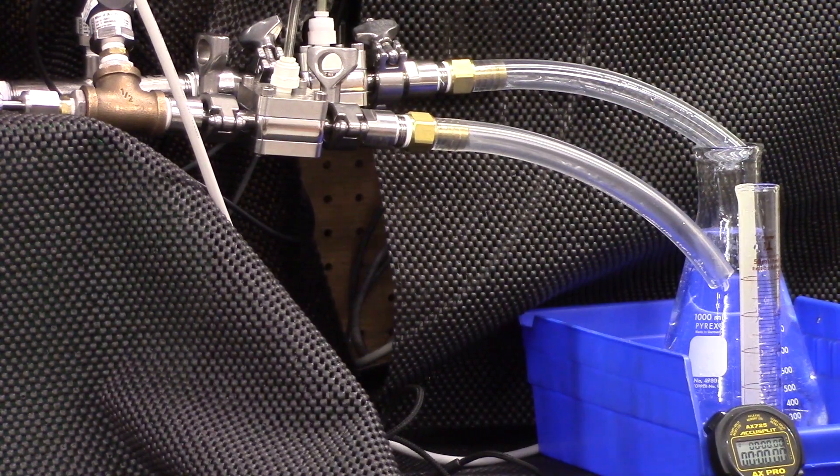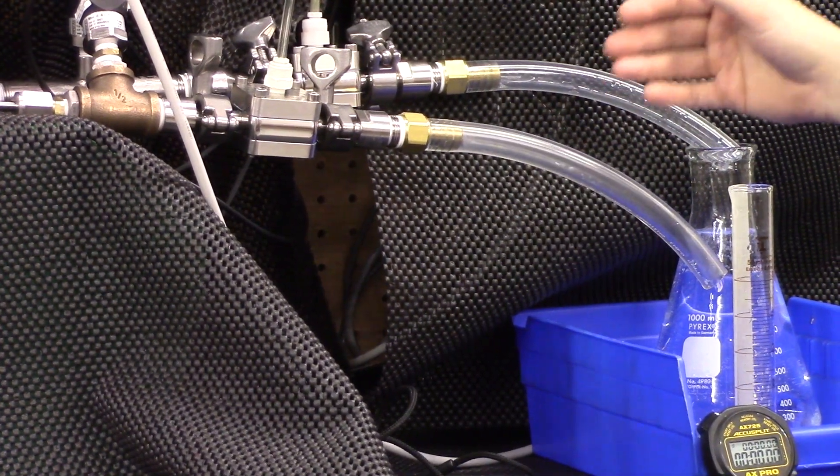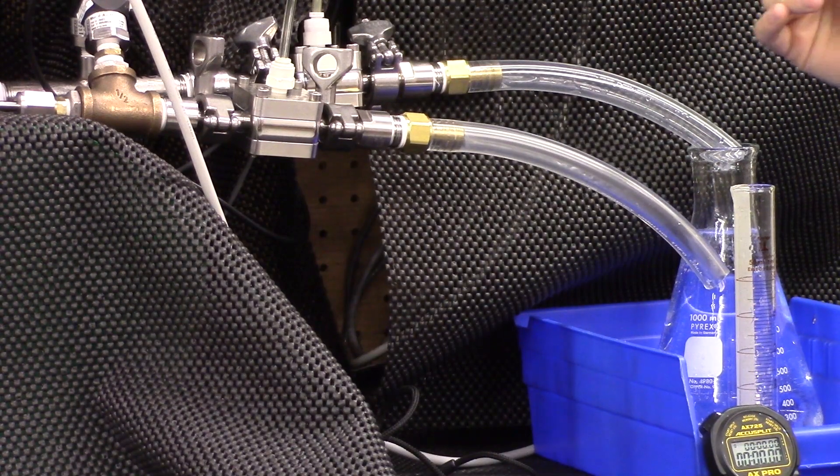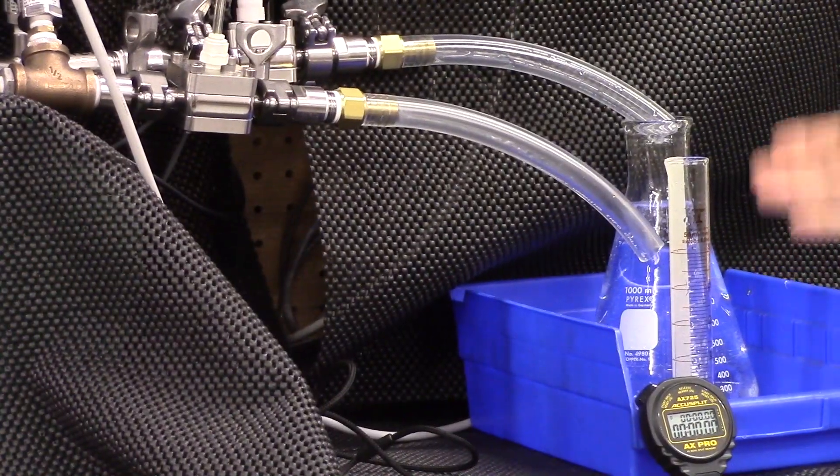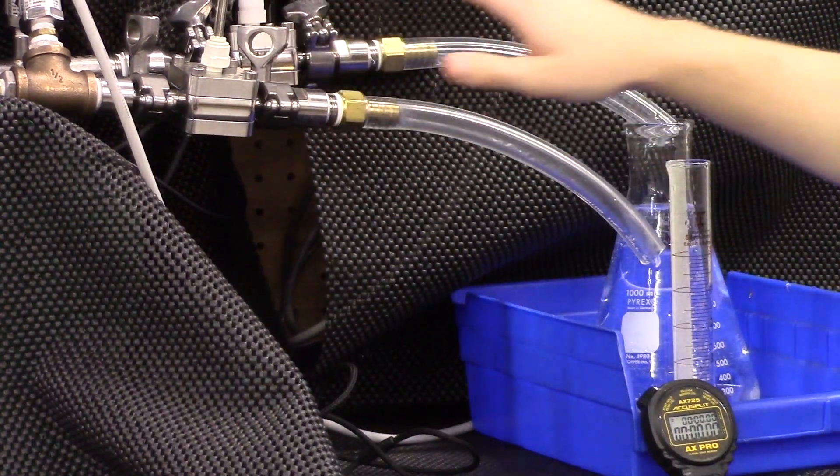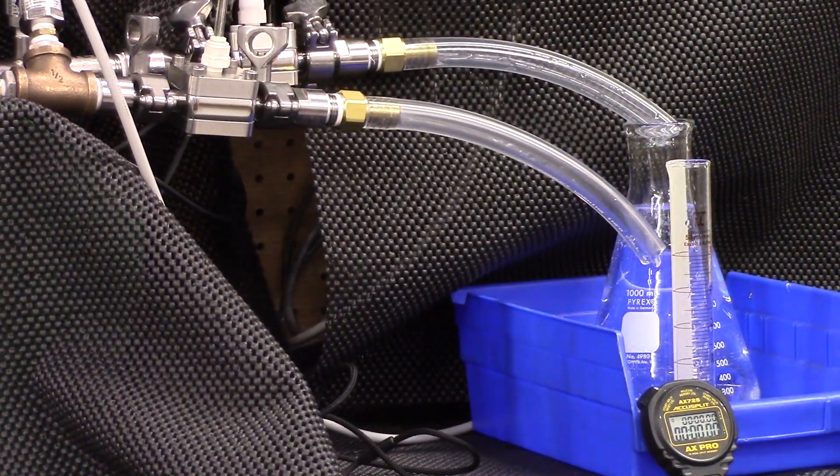From the outlet of the back pressure regulator, it exhausts directly to atmosphere. In a typical inline conditioning system, like we stated earlier, this would feed a supply pump or your skid downstream. In this case, we're going to use two different volumetric containers comparing these two identical back pressure regulators at a 100 to 1 flow turn down.